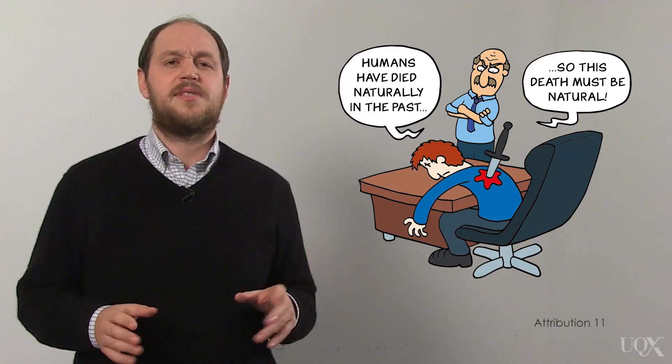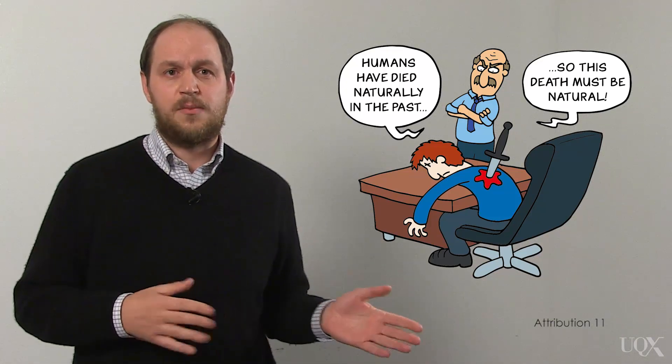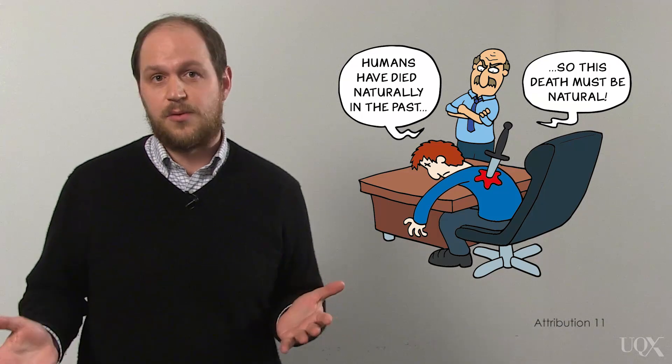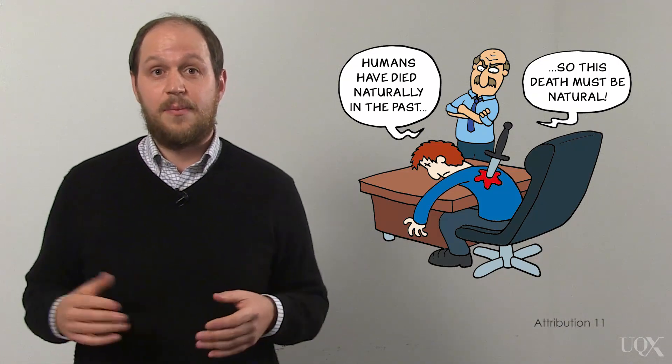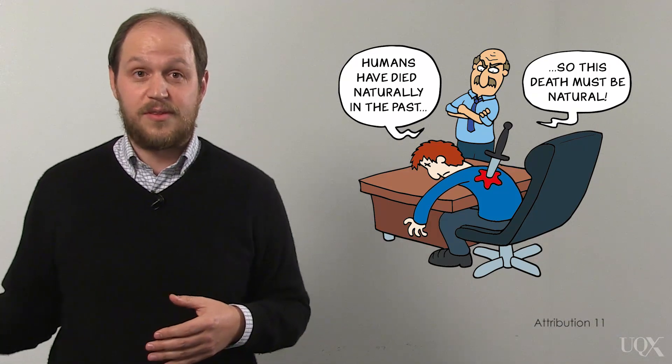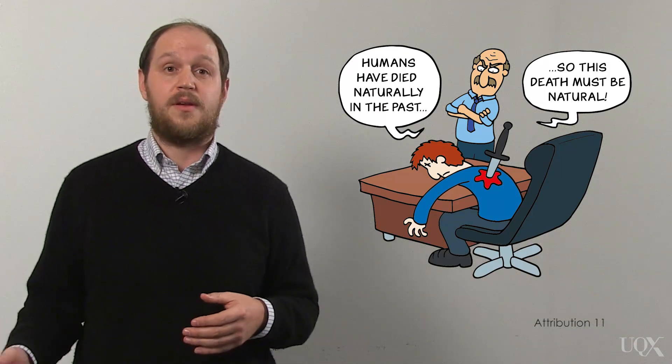This is like a defense lawyer who claims his client must be innocent of murder because humans have been dying from natural causes for 200,000 years. Meanwhile, the police caught his client at the scene of the murder with his fingerprints all over the murder weapon. Arguing that humans have been dying from natural causes for thousands of years isn't going to convince a jury to let the murderer off the hook. And arguing that climate changed naturally in the past doesn't negate the fact that humans are changing the climate now.